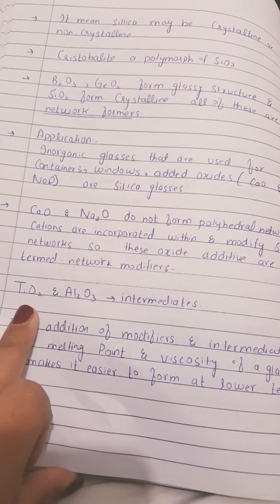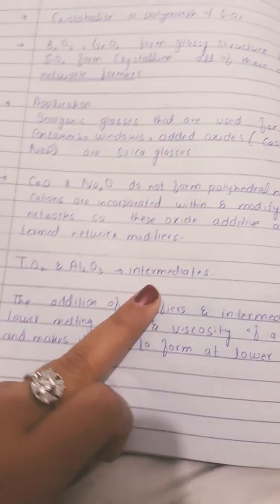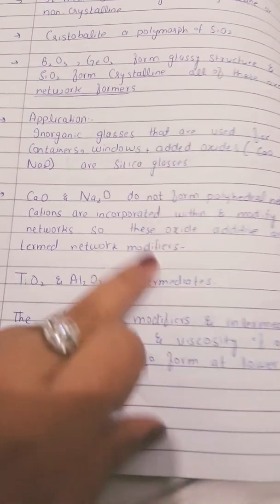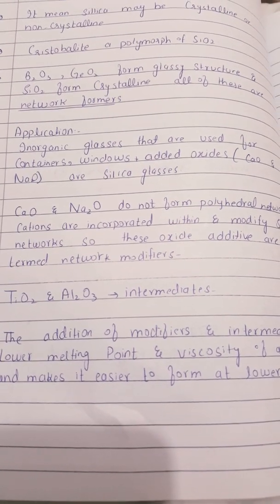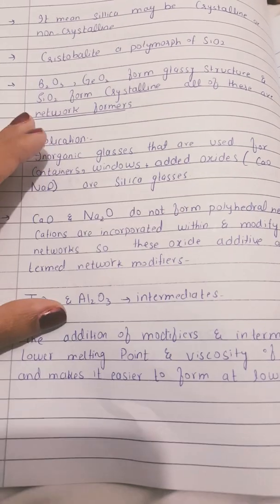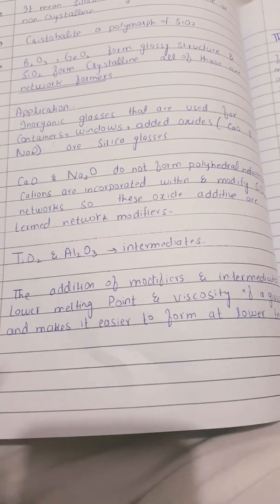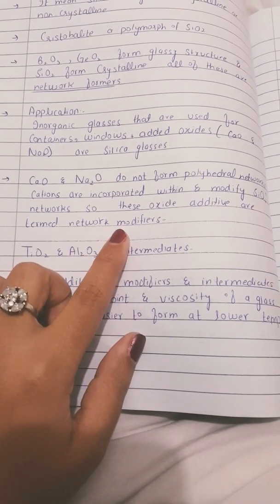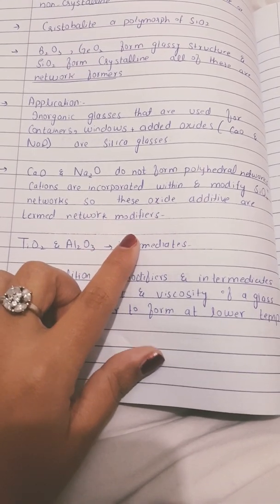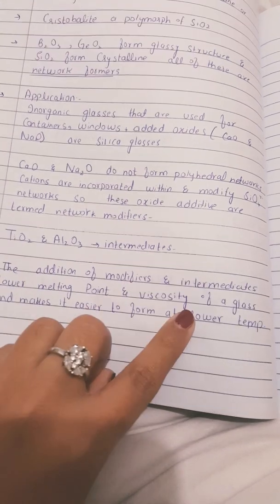Titanium oxide (TiO₂) and Al₂O₃ are intermediates. So the three categories are: network formers, network modifiers, and intermediates. When network modifiers and intermediates are added to silica glass, they lower the melting point and viscosity, making it easier to process at lower temperatures.